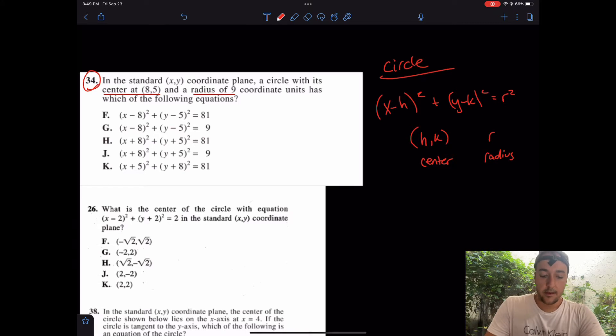For number 34 it says a center at (8,5) and a radius of 9. Taking a look at the answer choices, what would happen here? First of all it would be (x-8)² + (y-5)² equals... I take a look at the answer choices and they're either choosing between 9 and 81.